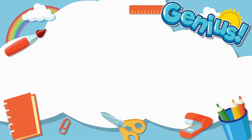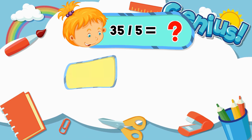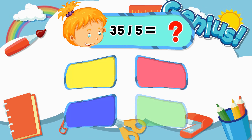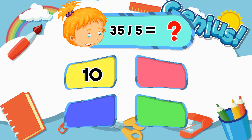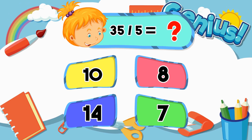What is 35 divided by 5? 10, 8, 14, 7. The answer is 7.